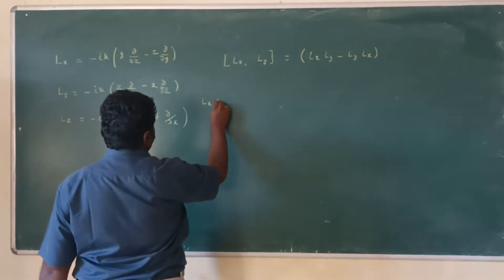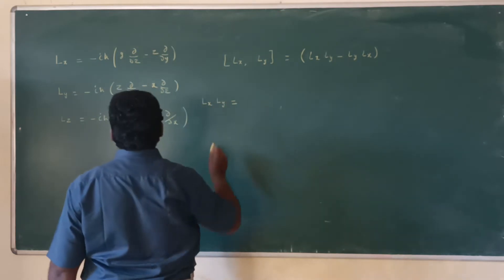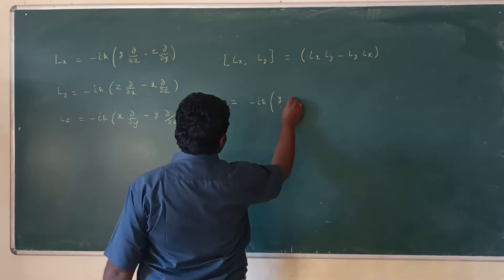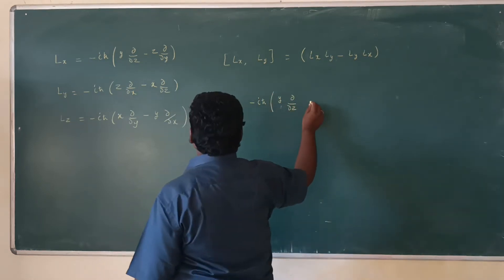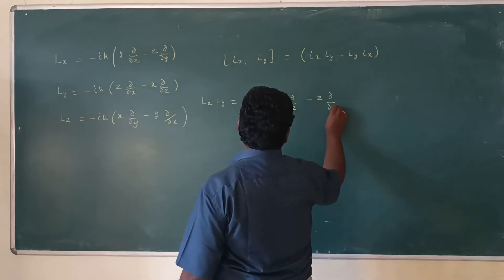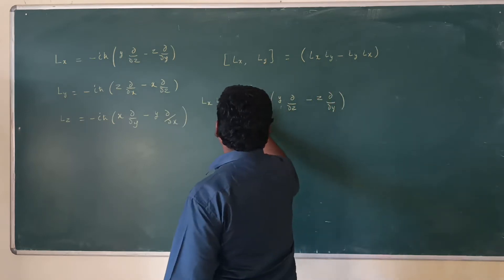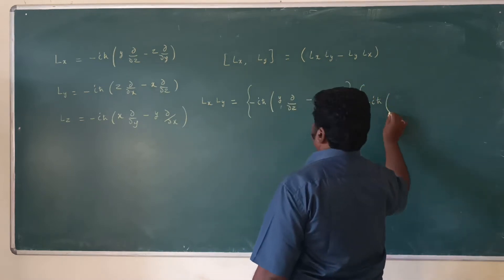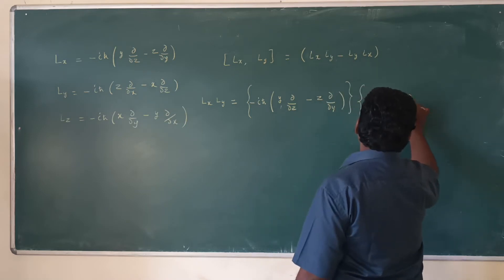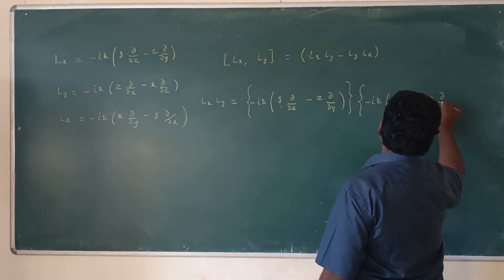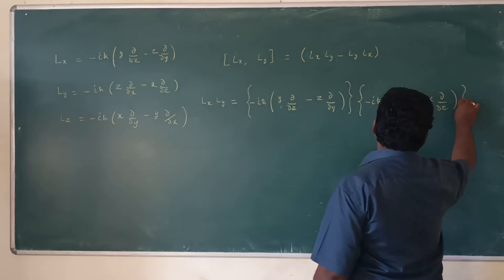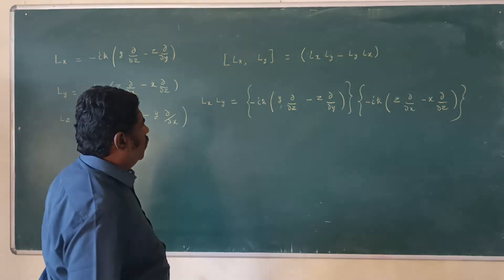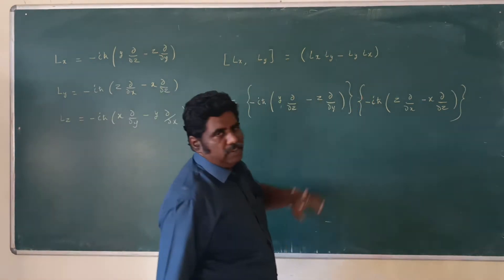LxLy is equal to: substitute the value of Lx = -iℏ(y ∂/∂z − z ∂/∂y), and Ly = -iℏ(z ∂/∂x − x ∂/∂z). This gives the value of LxLy. Now multiply -iℏ times -iℏ: minus times minus gives plus, and i² = −1.